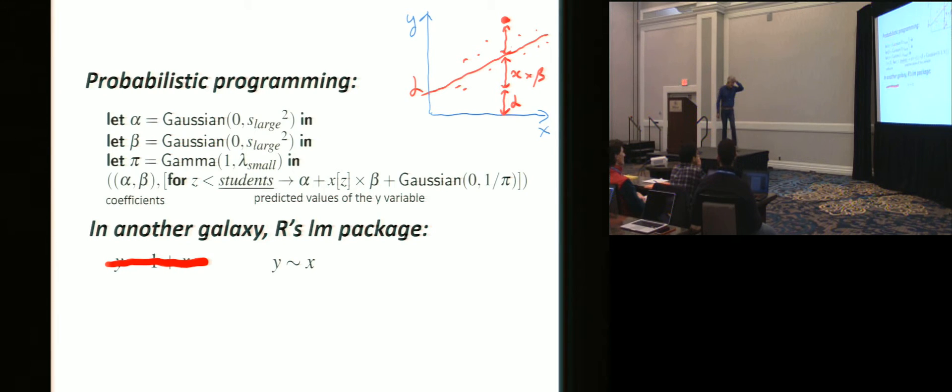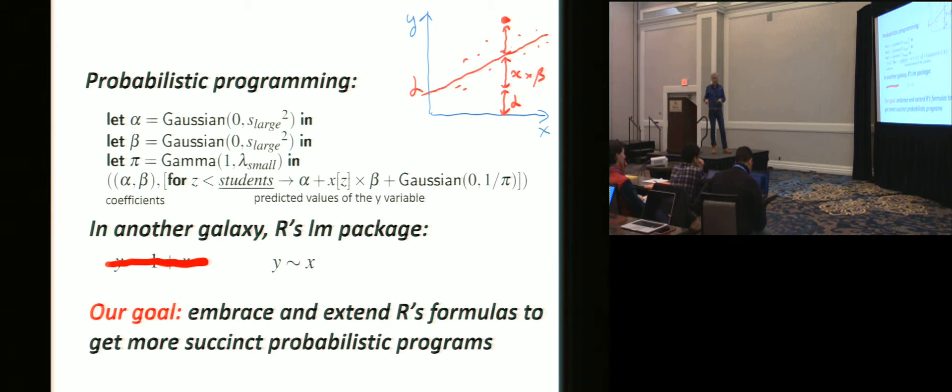And so these guys are super popular. You know, you go search for LM or LMER, there's a bunch of packages. There's zillions of these models out there. They're really popular. They work. Data scientists like it. When you're modeling data like that, you want to try one model, try another one. Succinctness is really wonderful. You want to try different things and play them off against one another. So this pretty thing, although it's very explicit, it's got too much boilerplate. So the goal of this paper is to embrace and extend R's formulas to get better probabilistic programs.